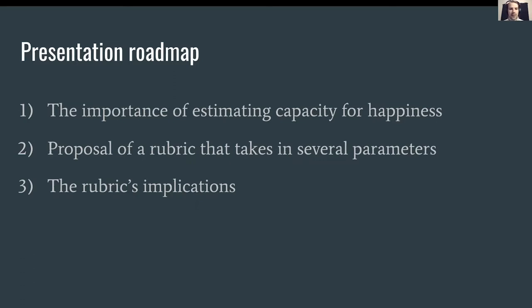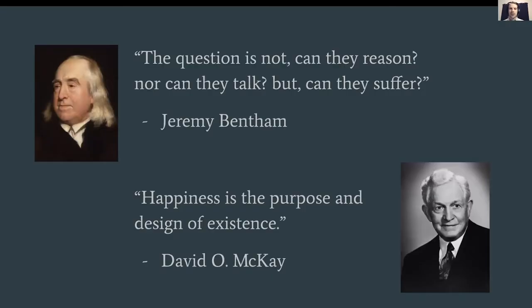Throughout this presentation we'll hit three points: the importance of estimating the capacity for happiness as opposed to other attributes like intelligence; a proposal of a rubric with several parameters that outputs a score for an organism's capacity for happiness; and the rubric's implications. I take the utilitarian position that the maximization of global happiness is the ultimate good, and often the most efficient way to improve global happiness is to alleviate suffering where it exists.